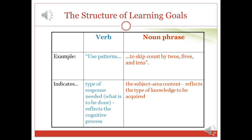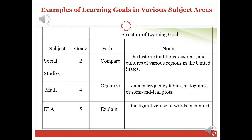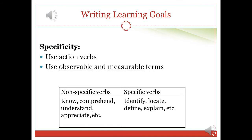The second component of a learning objective is the noun phrase. This component indicates the type of knowledge to be learned and is related to the subject area. In this example, we refer to numbers, more specifically to skip counting. The table provides three examples of learning goals. You can see the cognitive skill targeted by each objective in the verb column and the content of learning in the noun column. When formulating learning goals, we must use action verbs which indicate an operation that is observable and can be measured.